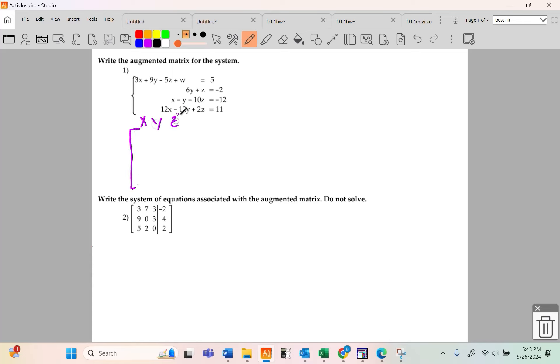The number goes x, y, z, w, bar, and your constants. I don't think there's anything too tricky about this one, but the first column is your x's. So this one has an x, this one does not, this one has one of them, and this one has 12. Your second column is your y's. We've got a 9, we've got a 6, we've got a negative 1, we've got a negative 12. I'm more likely to not make a mistake versus writing horizontally. We have a negative 5, we have a 1, we have a negative 10, and a 2.